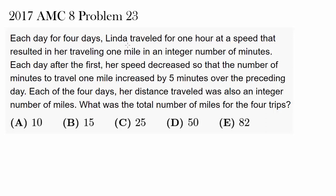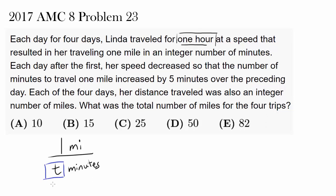Each day for 4 days, Linda traveled for 1 hour, so every single day she is traveling the same amount of time at a speed that resulted in her traveling 1 mile in an integer number of minutes. So she is traveling 1 mile in some integer number of minutes, T minutes, and we know this T has to be integer.